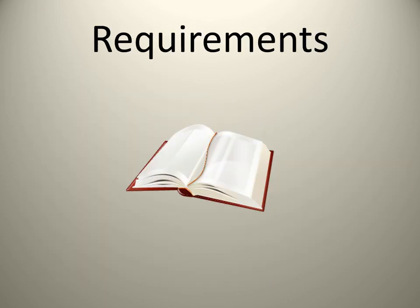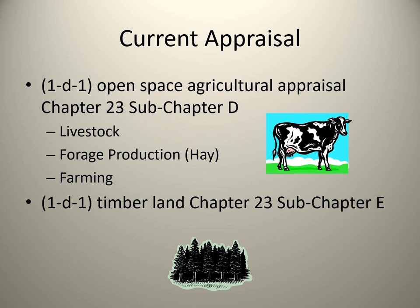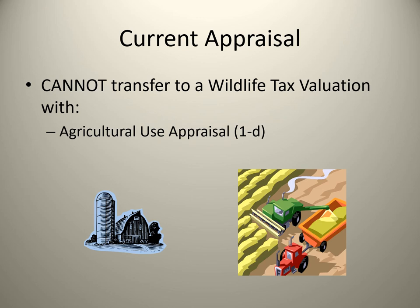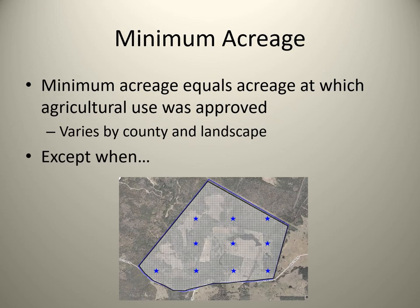Next, the requirements. To obtain a wildlife tax valuation, you must currently have a 1D1 open space agricultural appraisal for livestock, forage production, or farming, or a 1D1 timberland. If your current appraisal is a 1D1 agricultural use appraisal, you cannot transfer to a wildlife tax valuation. If you currently have a 1D1 ag valuation, you can roll your property into the wildlife valuation.